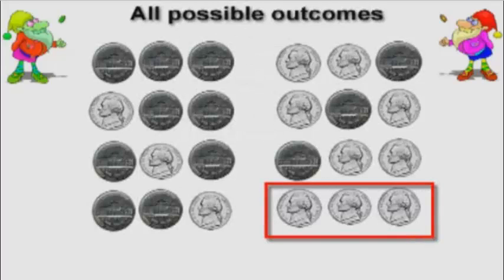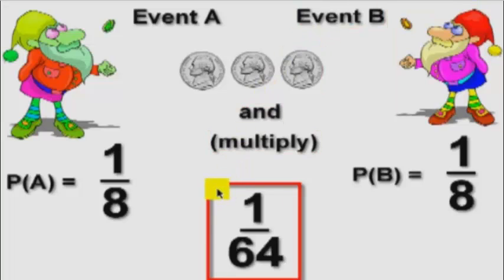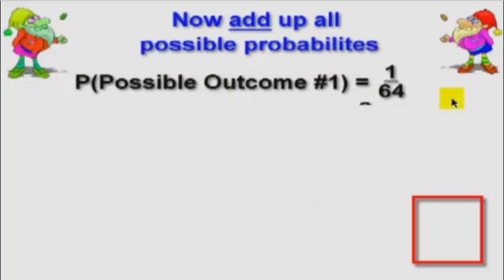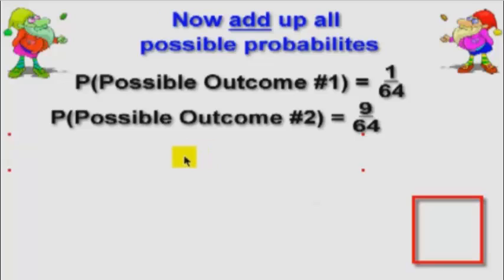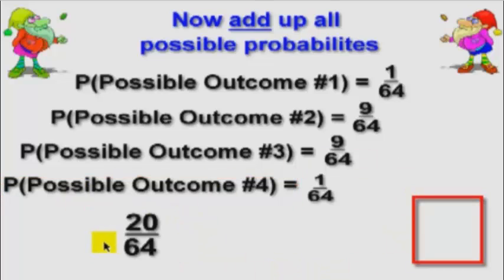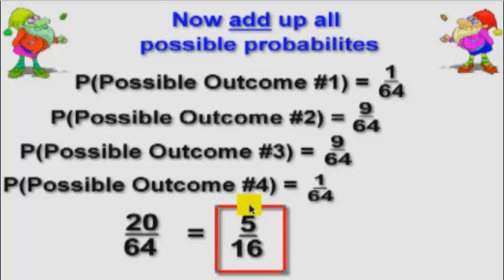The final outcome is they could both get three heads. There's one way to get three heads out of eight possibilities, so we multiply to get one out of sixty-four. Now we add up all the individual outcome probabilities: one out of sixty-four for zero heads, nine out of sixty-four for one head, nine out of sixty-four for two heads, and one out of sixty-four for three heads. After adding and reducing, the final answer is five out of sixteen.